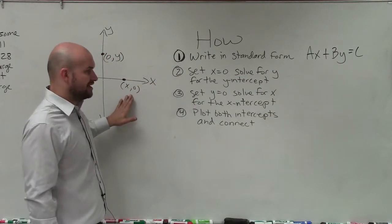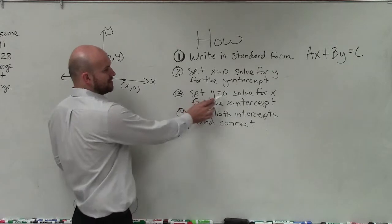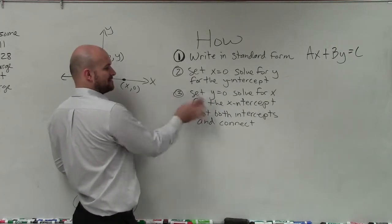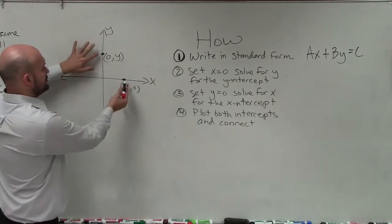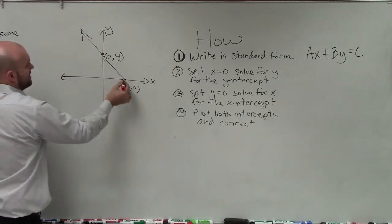Then to solve for the x-value for the x-intercept, you put 0 in for y, because that's what y is for the x-intercept, and then solve for the intercept. Once you know those two values, you plot them, and then connect.